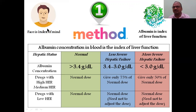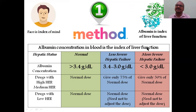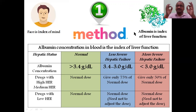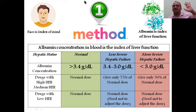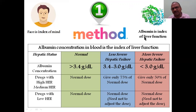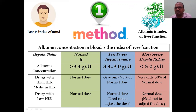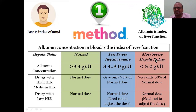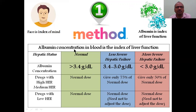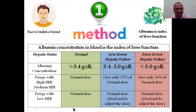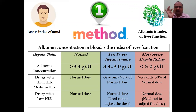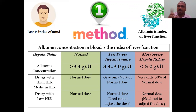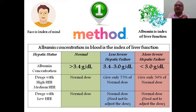Albumin is a protein present in the blood and is an index of liver function, just like creatinine clearance is the index of kidney function. The table has three columns: normal liver in green, moderate/less severe hepatic failure, and more severe hepatic failure in red. Normal liver: albumin concentration greater than 3.4 g/dL — no need to adjust the dose.